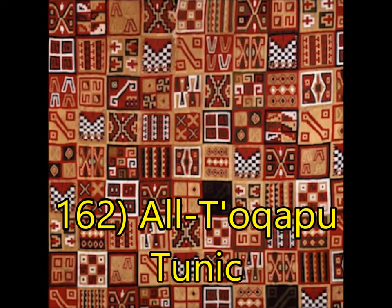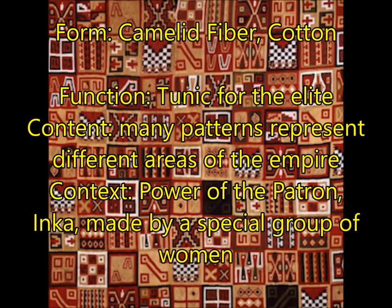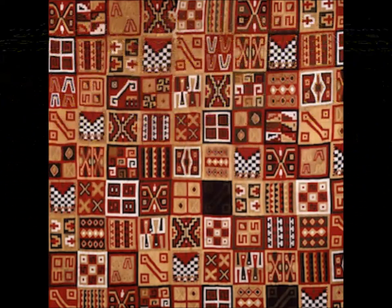Here you have the Unku (Alto Capu) tunic. Remember it is made from camelid fiber and cotton — one way the warp side would be camelid fiber (a llama), and the horizontal weft would be made out of cotton. For function, this tunic is worn by the elite only, not commoners. For content, many different patterns represent the different groups of people from all over the Incan Empire. Alto Capu tunics were made by a very specialized group of women; they were considered almost sacred in their role as weavers of these special tunics.